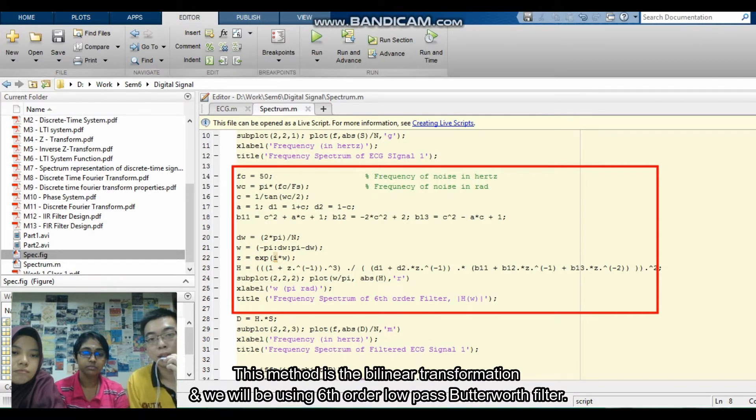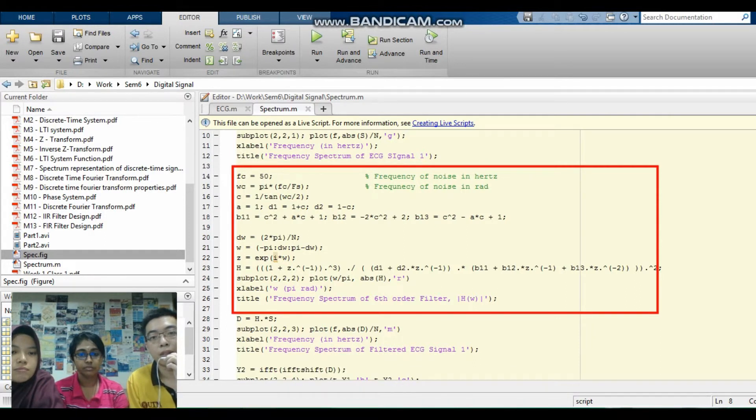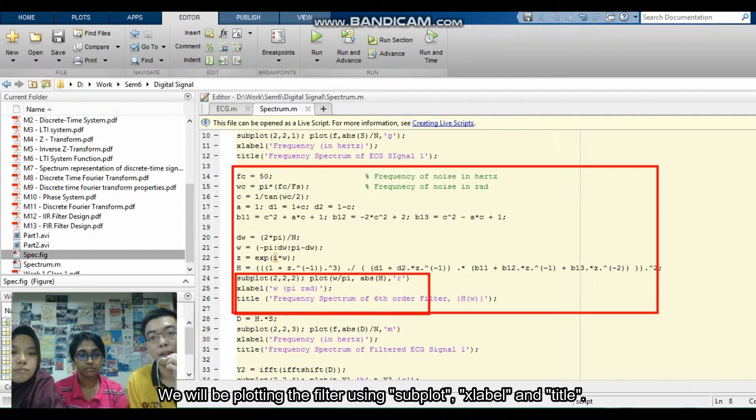This method is actually the bi-linear transformation. And we will be using the 6-order low-pass Butterworth filter as our filter. And finally, we will be plotting the filter using the subplot and X-label and Y-label.